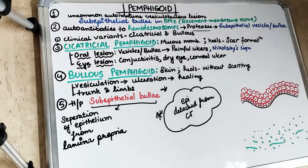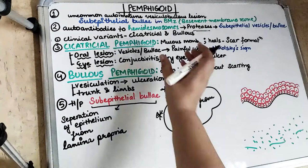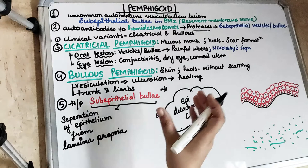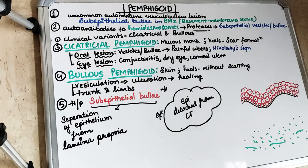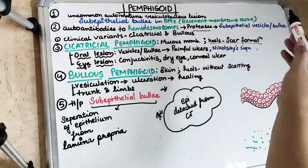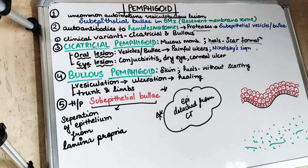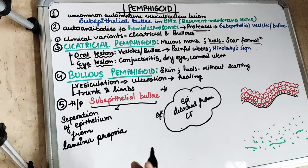Nikolsky sign is also positive in pemphigoid — similar to pemphigus vulgaris — where pressure on the skin or mucous membrane causes the surface layer to come off. Healing occurs by scar formation. Eye lesions include conjunctivitis, blister formation in the eyes, and corneal ulceration. Fibrosis and scarring of the lacrimal duct can lead to dry eye, and scarring of the conjunctival mucosa can result in blindness.